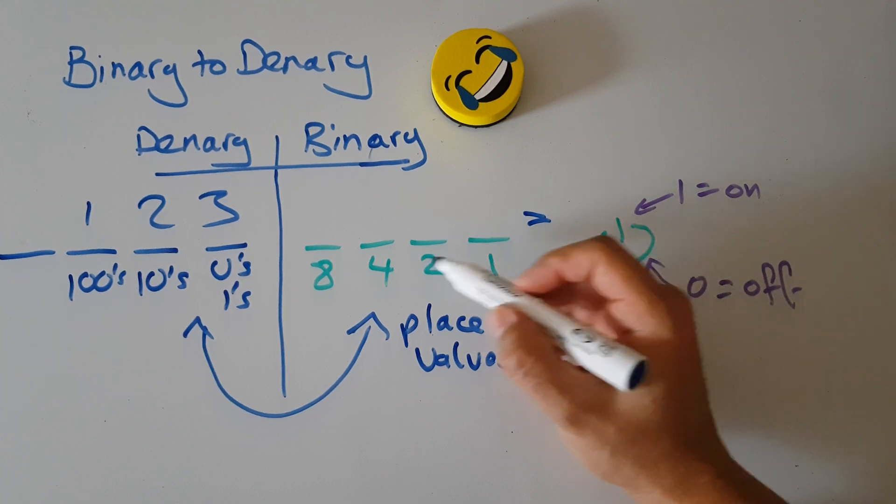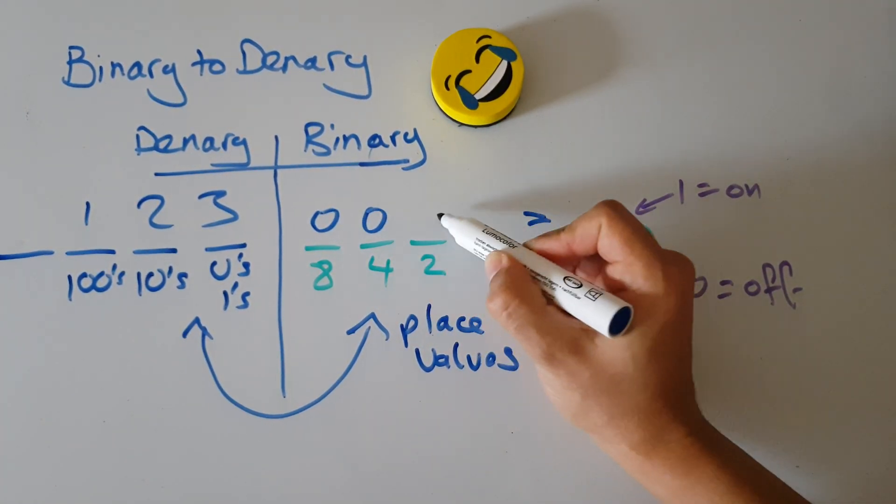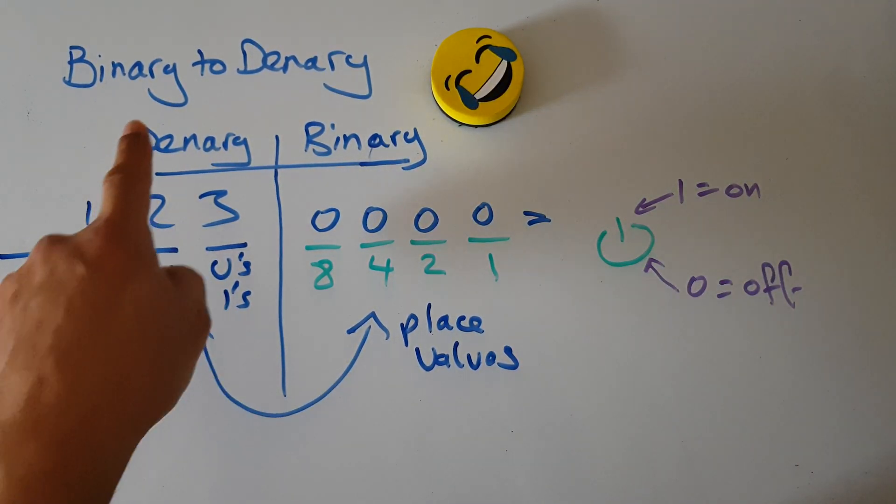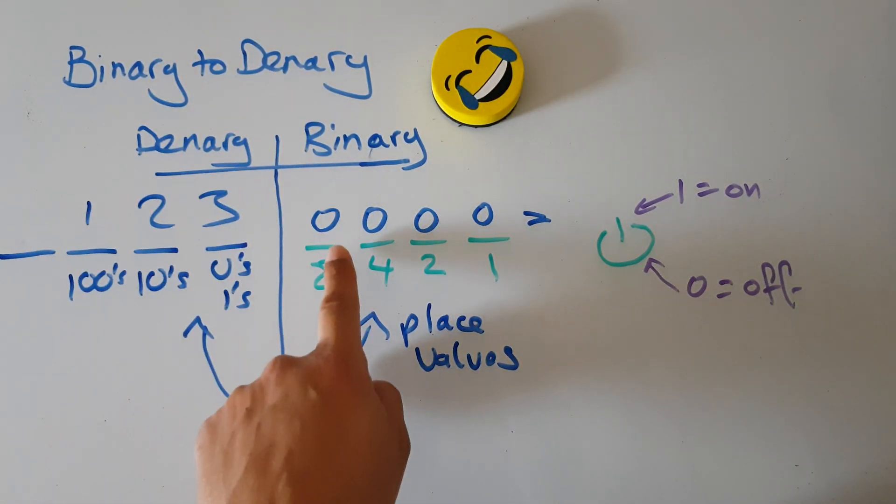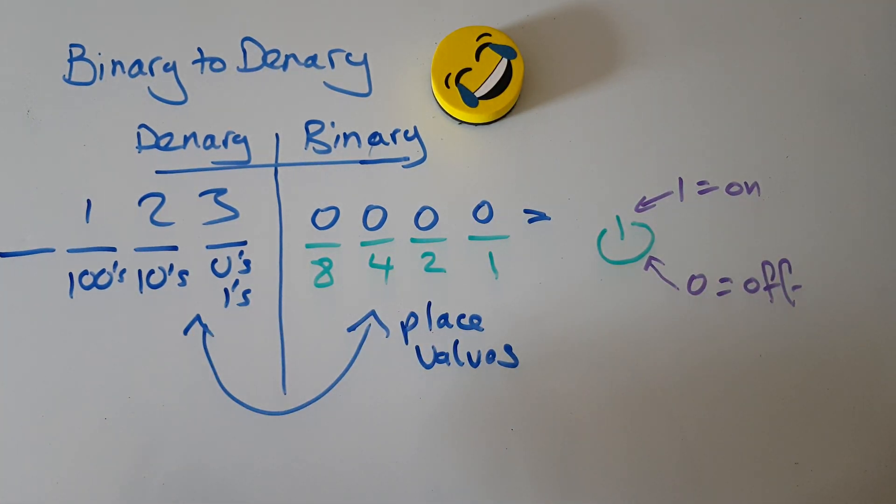For our conversion, I'm just going to switch some of these place values on. So that's off, off, off, and actually I'm going to keep this one off. We're talking about converting from binary to denary. Here's our binary number - your first one: 0000. In denary, that equals what?